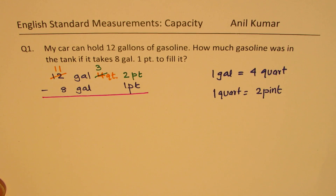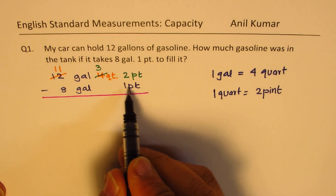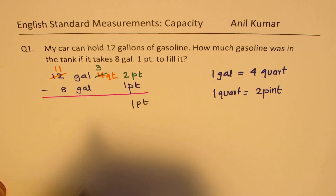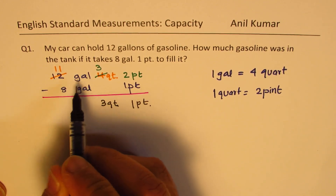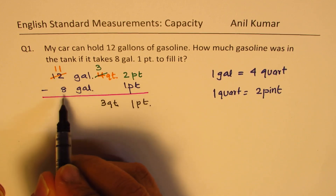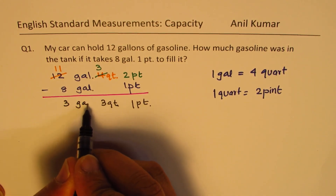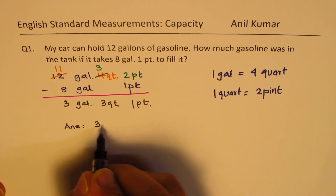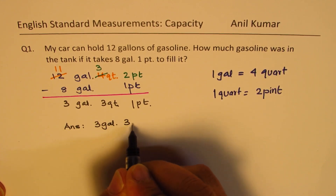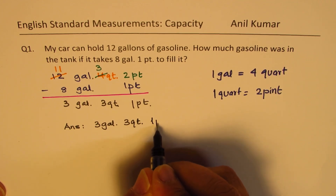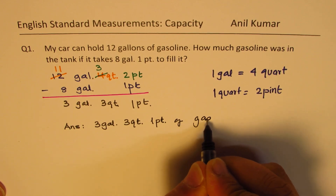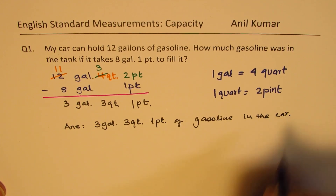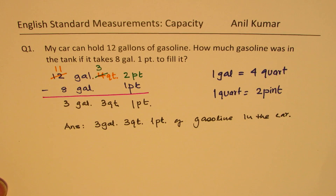Now we can do the subtraction. From two pints, if we take away one, we are left with one pint. From three quarts there is no quart to subtract, so we get three quarts. And from 11 gallons, if I take away eight, we get three gallons. So the answer is: to begin with we had three gallons, three quarts, and one pint of gasoline in the car.